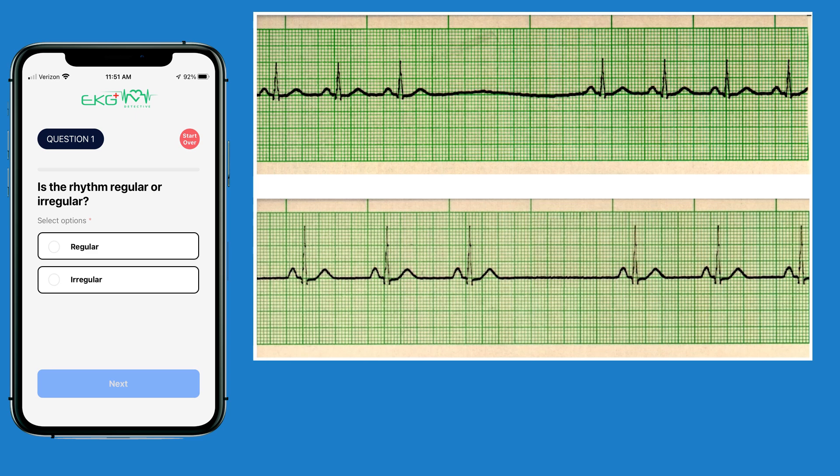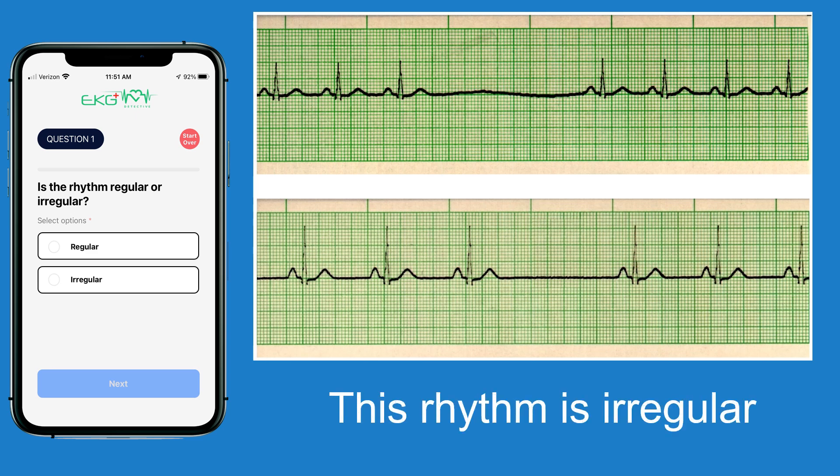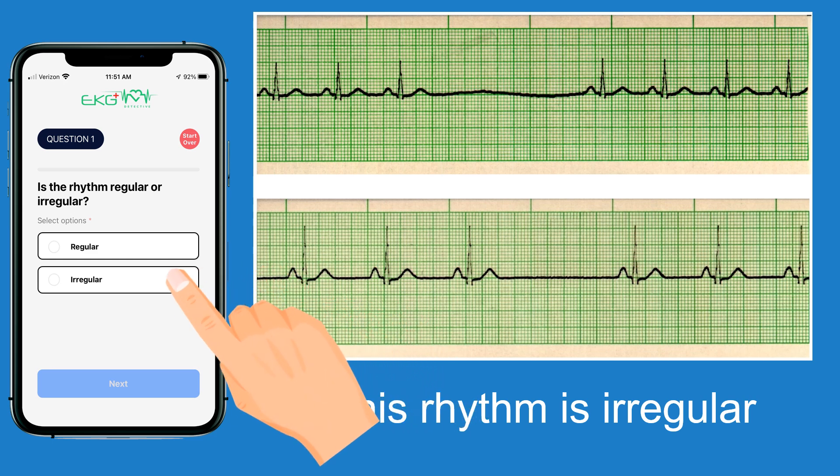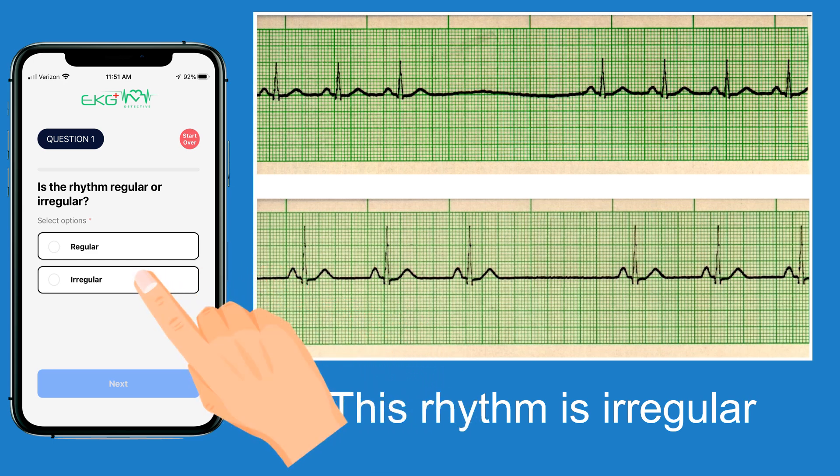For this video we are going to be using two ECG tracings — one is an example of a sinus arrest and the other is an example of a sinus exit block. The first question the app asks is whether the rhythm is regular or irregular. Looking at these two ECG tracings, they are irregular. It does appear like there are some pauses, which we will address in the next couple of slides. Since it is irregular, we will select irregular in the app and then select next.